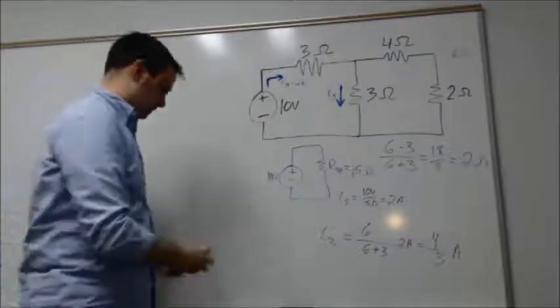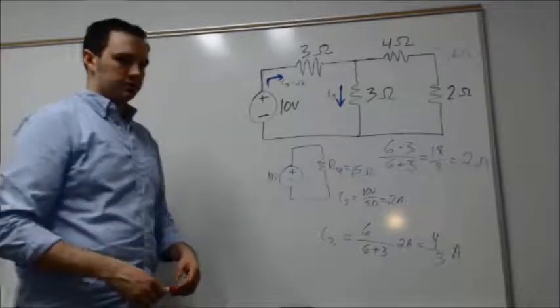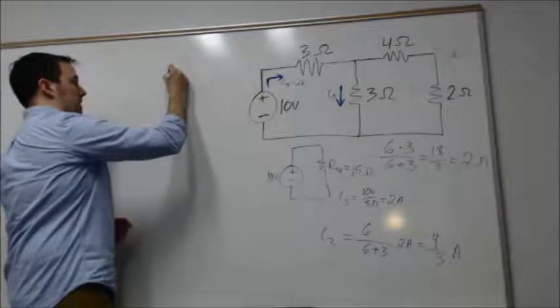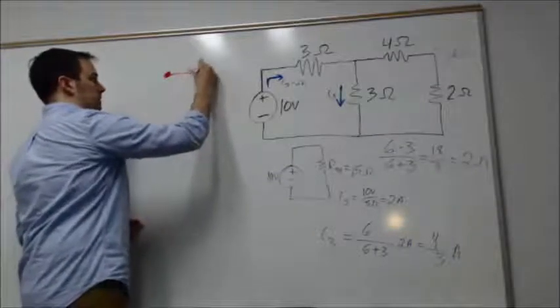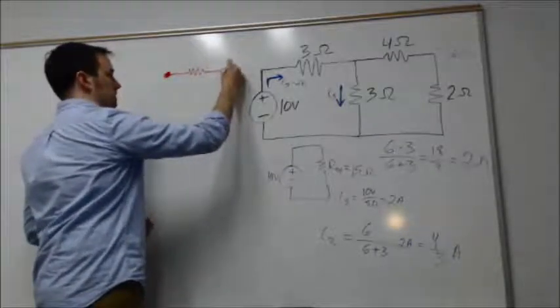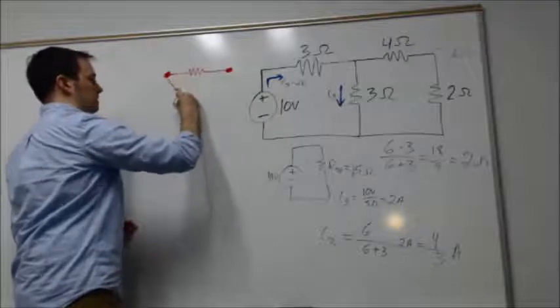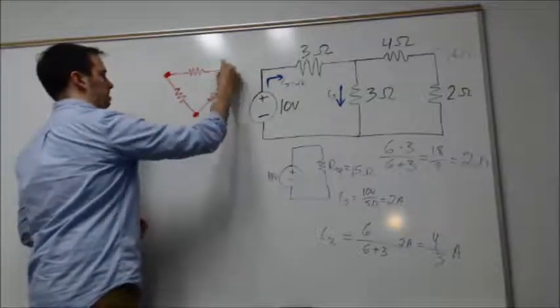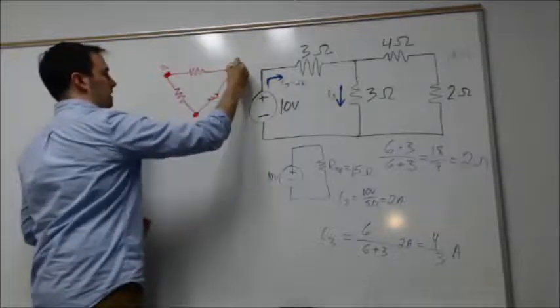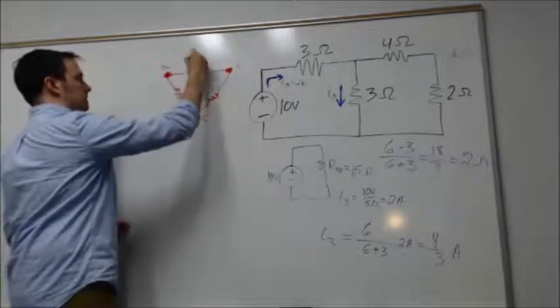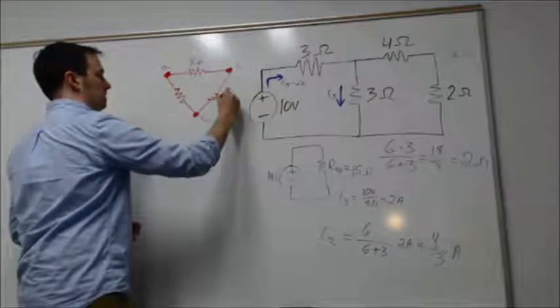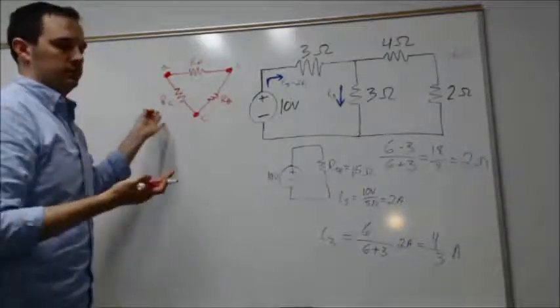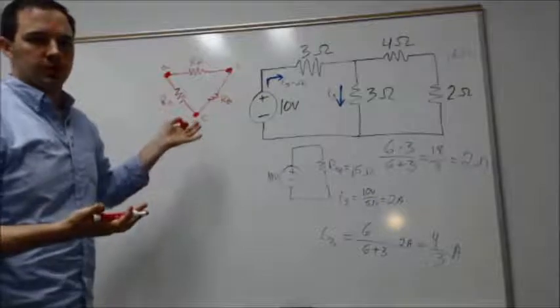The final topic I'll illustrate is these circuit transformations. In the case where we might have a delta configuration of resistors that would look something like this with nodes A, B, and C, and resistors R_a, R_b, and R_c.